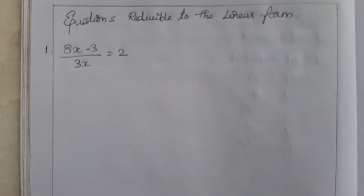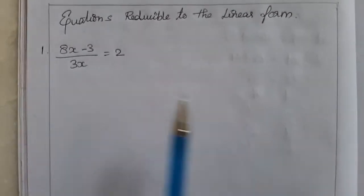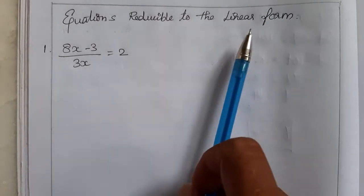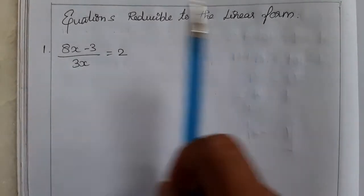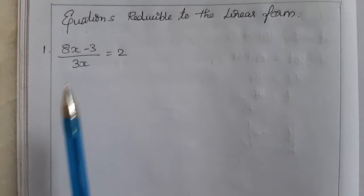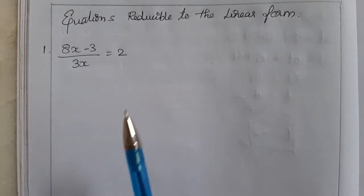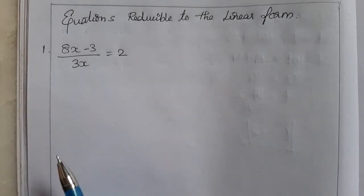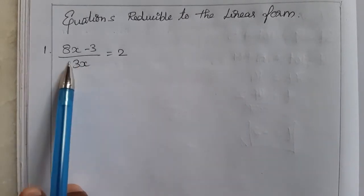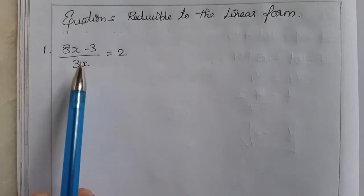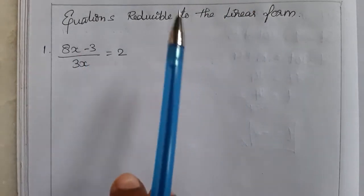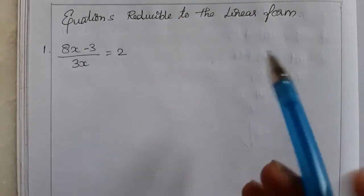Hi students, today we are going to learn about equations reducible to the linear form. In linear form, normally there will be no variable in the denominator. A fraction with a number in the denominator is fine, but here you can see a variable in the denominator — but it can be reduced to linear form, and that's what we are going to see here.